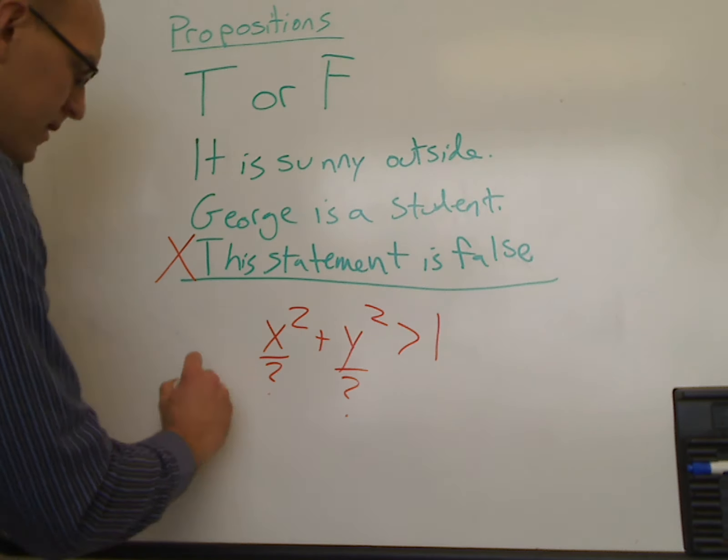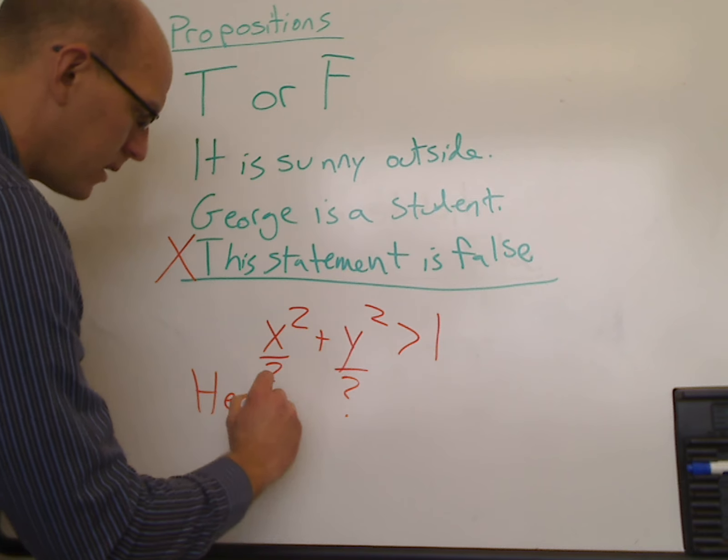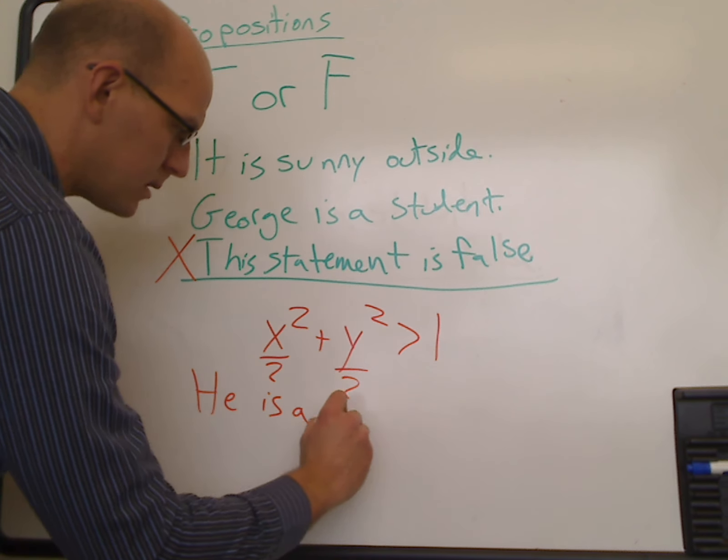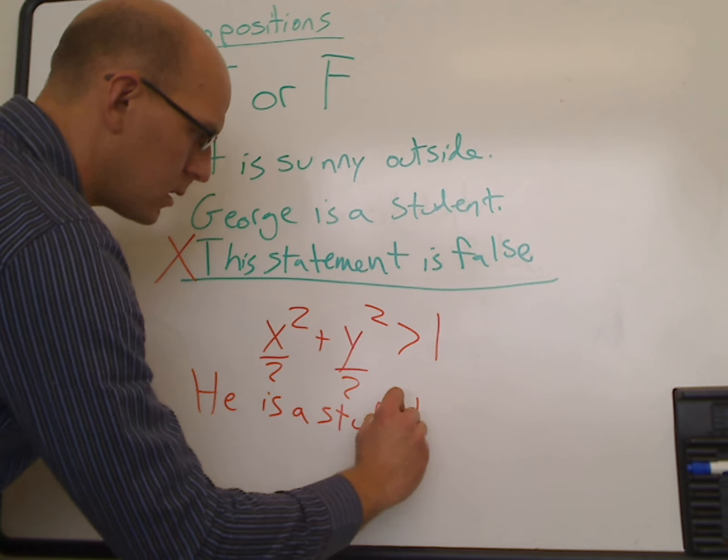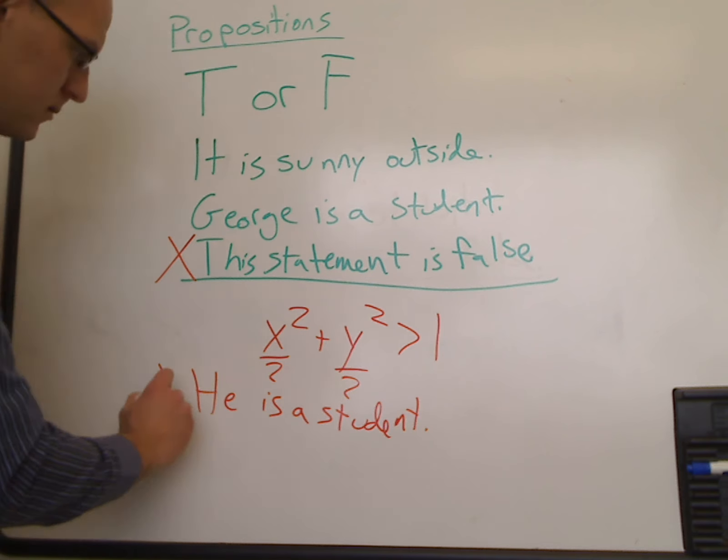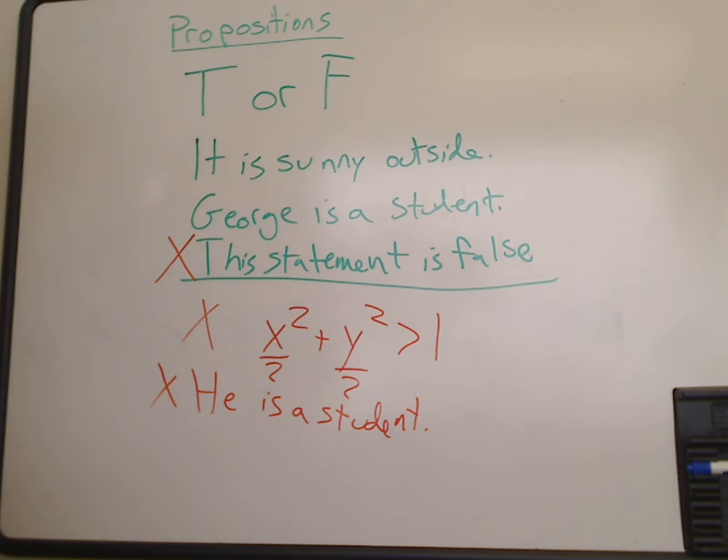In the same way, he is a student is not a proposition. It is not a proposition because we don't know who he is. He is just like a variable. If we don't have a quantified variable, if we don't specify what he means or what x squared means, we can't say whether it's true or false.